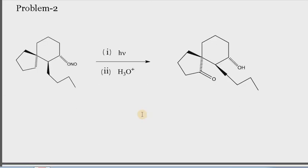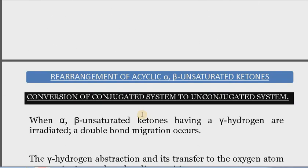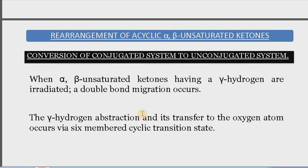So this is the Barton reaction. Last is the rearrangement of acyclic alpha-beta unsaturated ketones — conversion of a conjugated system to an unconjugated system. During this rearrangement, one conjugated system gets converted into an unconjugated system.